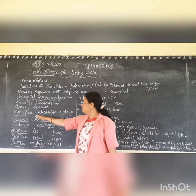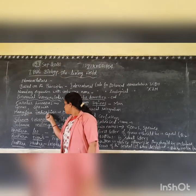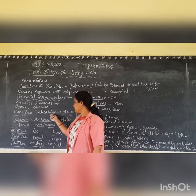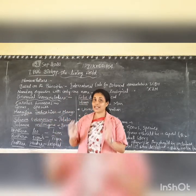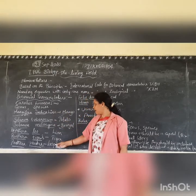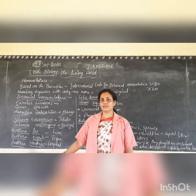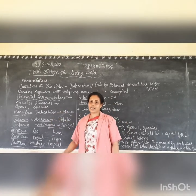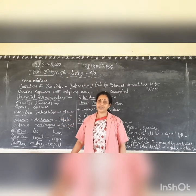For example, Mangifera indica Linn. — Mangifera indica is the scientific name of mango, given by Linnaeus, hence written as Mangifera indica L. That is the scientific name of mango. Generally you may not always write the scientist's name, but as a rule you have to write the name of the scientist who first observed and gave the scientific name to that particular species.